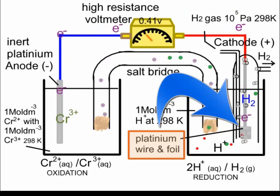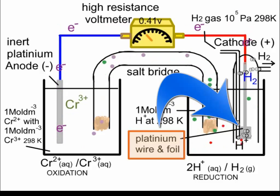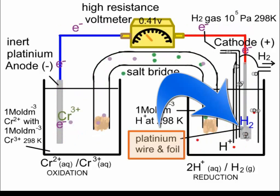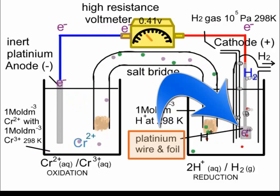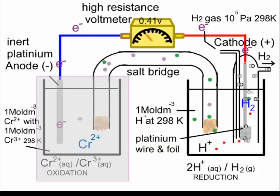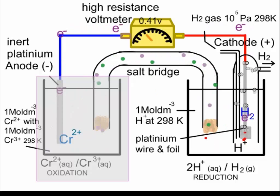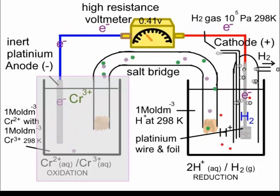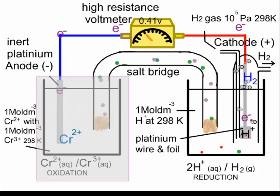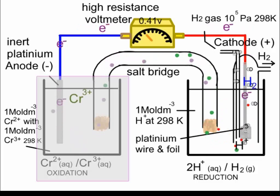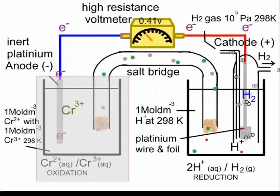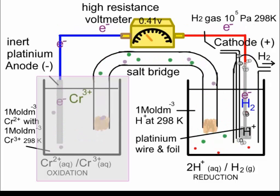The gas cell also has a platinum wire connected at the bottom to a platinum foil, onto which hydrogen gas bubbles and hydrogen ions are attracted to pick up electrons and undergo reduction to form H2 molecules. Next, let's consider what's happening inside each of these half cells — in particular the Cr2+/Cr3+ half cell on the left.